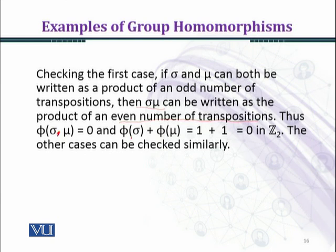On the other hand, we can compute right-hand side phi(σ) plus phi(μ), and as you know that sigma is odd number of transpositions, is an odd permutation, the image of sigma under phi is 1 and the image of mu under phi is also 1, and 1 plus 1 is 2, and under modulo 2, we shall get 0.